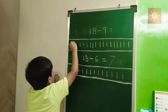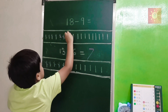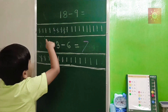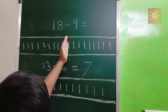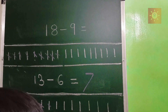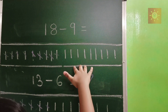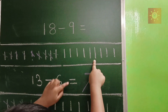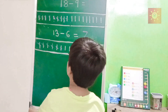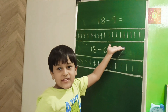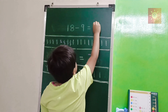So let's subtract: 1, 2, 3, 4, 5, 6, 7, 8, 9. Nine lines crossed out. Now we are not going to count the crossed lines. We are only going to count the ones never crossed: 1, 2, 3, 4, 5, 6, 7, 8, 9. It's 9! Oh friends, look - we crossed out 9 and 9 is left. So the answer is 9.